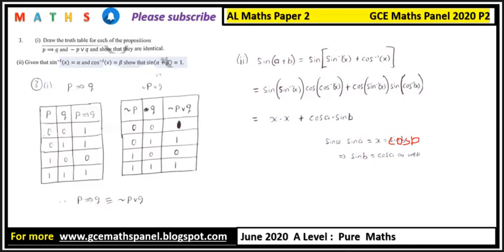In the next step, our x is the same as cosine b, so we get cosine b times cosine b plus sine b times sine b, because cosine a equals sine b. This gives us cosine squared b plus sine squared b, and from trigonometric identities this equals one, as required.